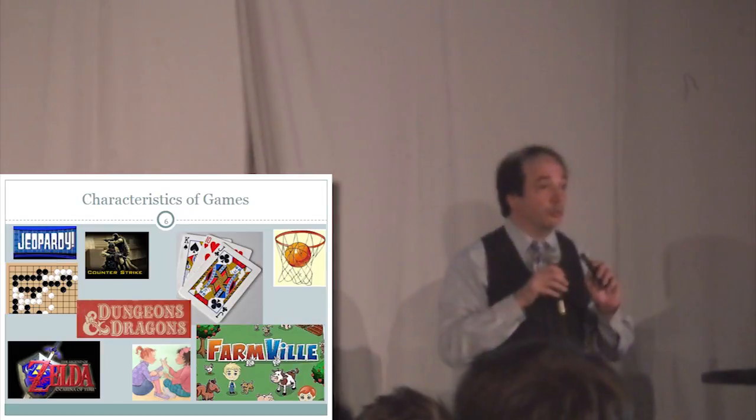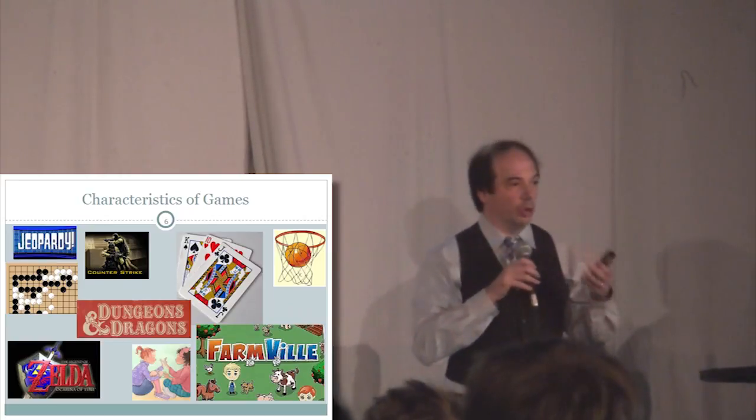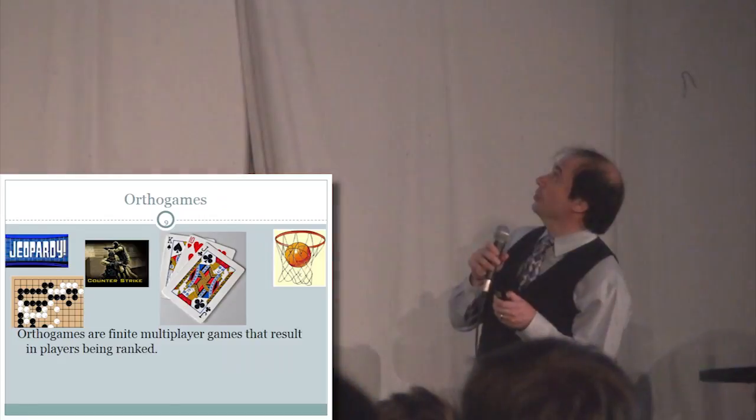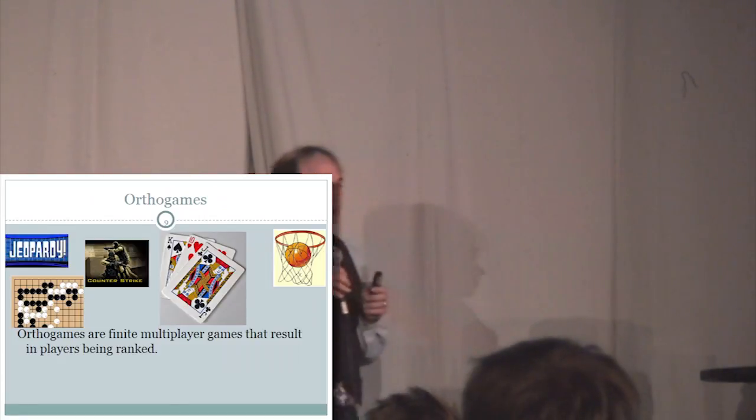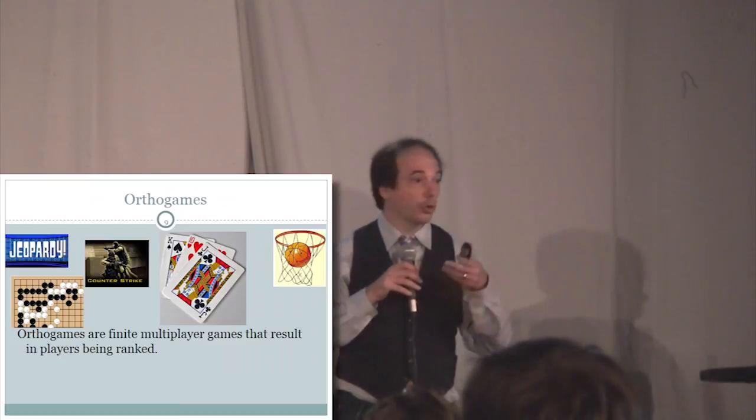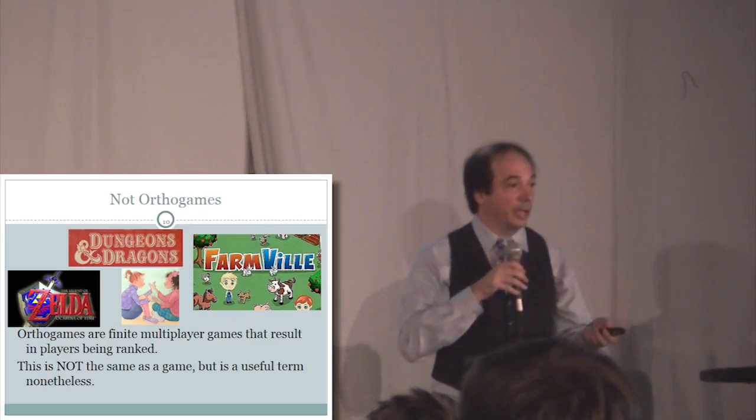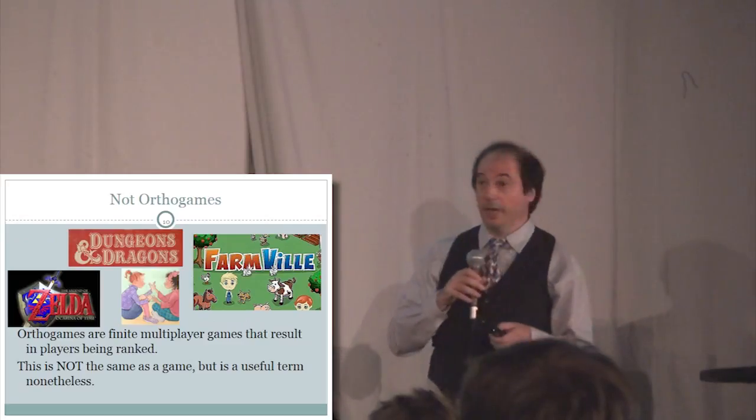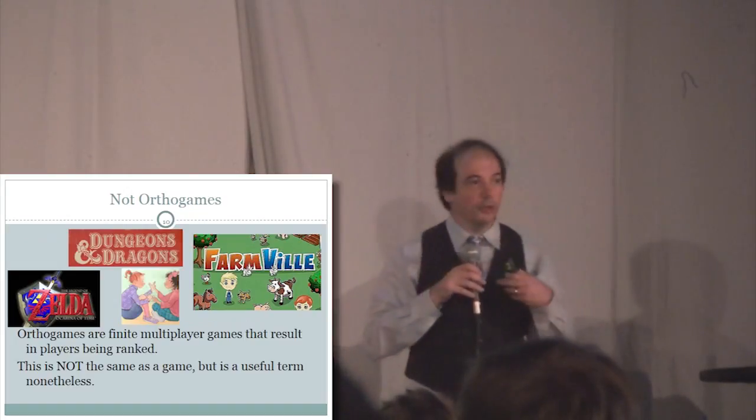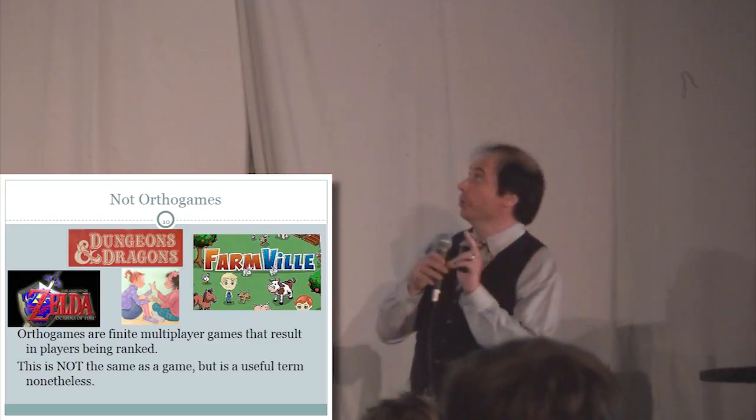We deal with all games, but games is such a broad subject that frequently when we talk about games, you'll think some game doesn't work for them. Because of that, we define ortho games. Ortho games are games which are finite and with players in rank, like chess or bridge or most traditional games. But it doesn't include a lot of games that are unbounded in length or where the object is to get points or something like that.